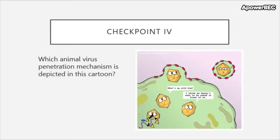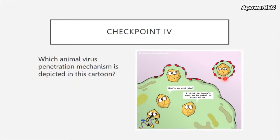Checkpoint four: which animal virus penetration mechanism is depicted in this cartoon? Here we see an enveloped virus binding to the plasma membrane, with some of its protein components becoming mixed in with the membrane.